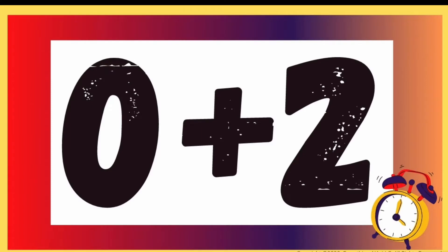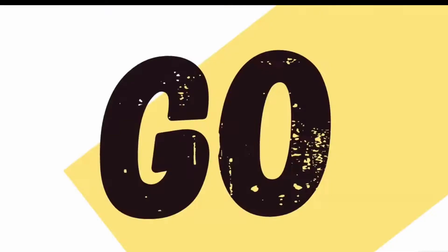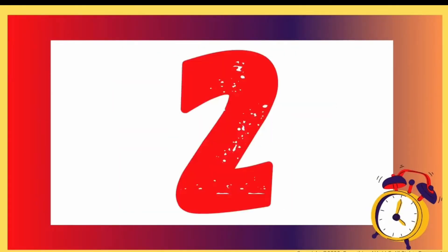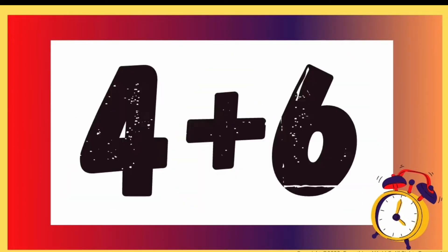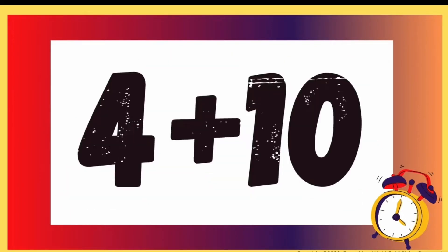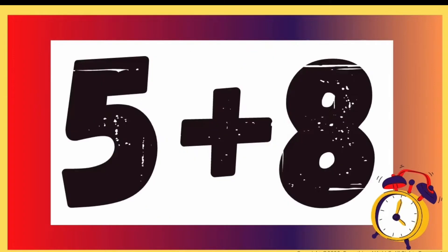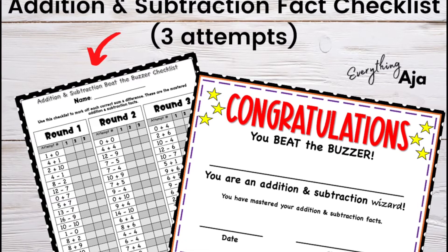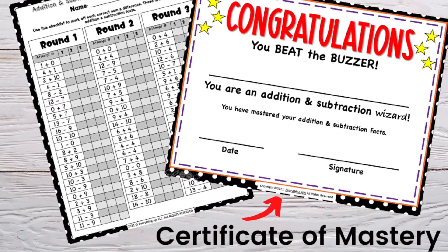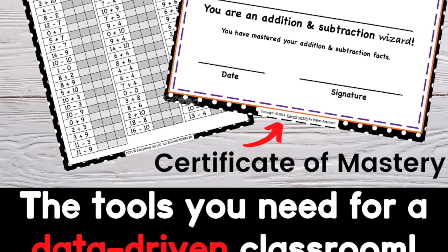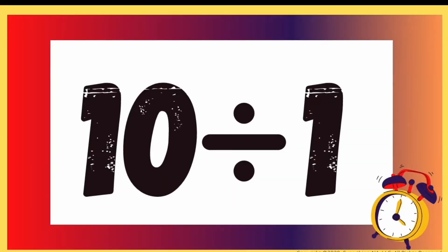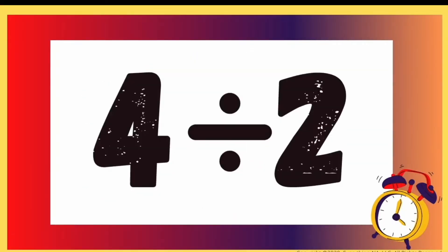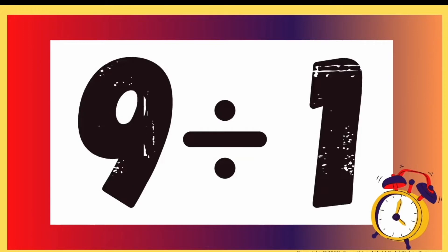A child is out if they miss more than two answers per round. You can always make it more challenging and make it one. If a child gets out, they did not beat the buzzer and they have to play again to beat their high score — this is how people can play it by themselves. The game also comes with a checklist with all the problems during each round, so kids can quiz themselves and mark off which answers they've gotten correct, thus knowing which problems they've actually mastered. This is a great way to hold children accountable.